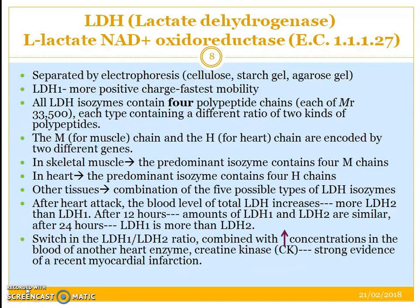LDH is lactate dehydrogenase, also called L-lactate NAD+ oxidoreductase. It can be separated by electrophoresis — separation on the basis of charge and electrophoretic mobility. LDH1 has the most positive charge and the fastest mobility. All LDH isozymes contain 4 polypeptide chains, each of 33,500 molecular weight, containing a different ratio of any two kinds of polypeptides. The M chain is for muscle and the H chain for heart, encoded by two different genes.